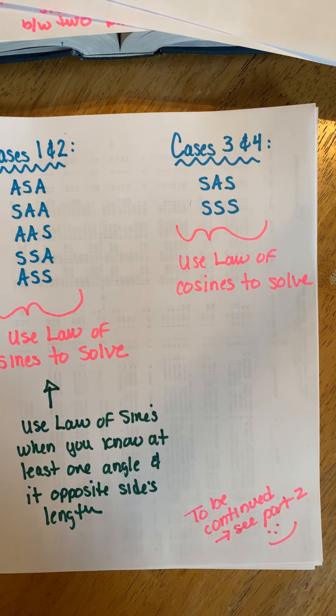The last case — the simplest to recognize — is Case 4: when you know all three sides of the triangle but don't know any angles. You know side A, side B, and side C. This is called a Side-Side-Side triangle, or SSS. All angles are unknown.